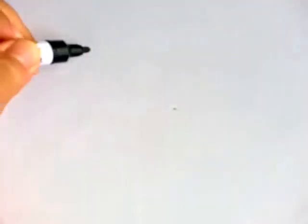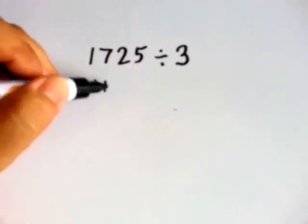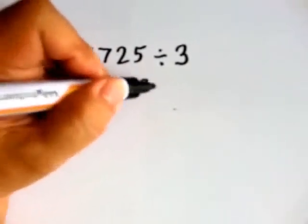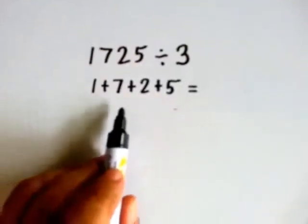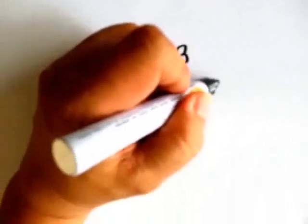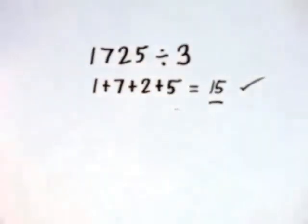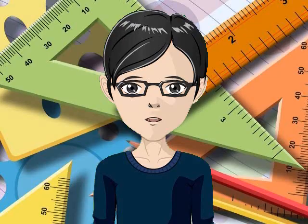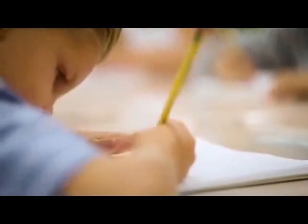Isa pang example: is 1725 divisible by 3? Huwag matakot sa malaking number — we just add the digits. 1 plus 7 plus 2 plus 5 equals 15. 15 is in the multiplication table of 3. So 1725 is divisible by 3. You can rewind the video and copy the examples if you want. It is good to have a list of rules and examples so you can find them when you need them.